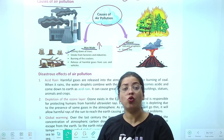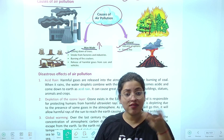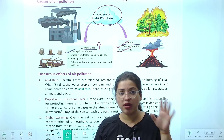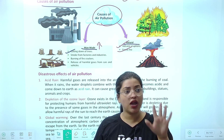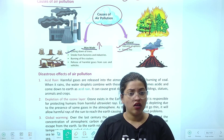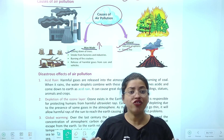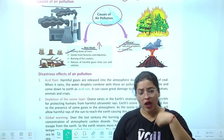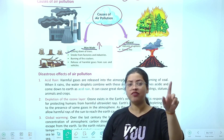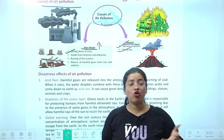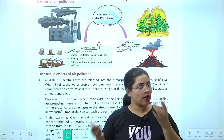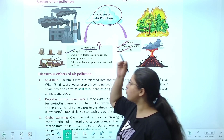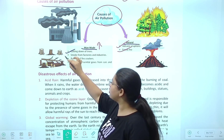Agar O2 nahi rahe ga, toh hum kya saans lenge? Humne padha tha air wali chapter mein ki hum hawa ke bagair toh 5 minute bhi nahi reh sakte. Aur hawa mein hume kya chahiye — O2. Also, jo hum carbon dioxide release karte hain jo humare liye harmful hai, us ko absorb karte hain plants. So cutting down of trees is one of the most important factors.